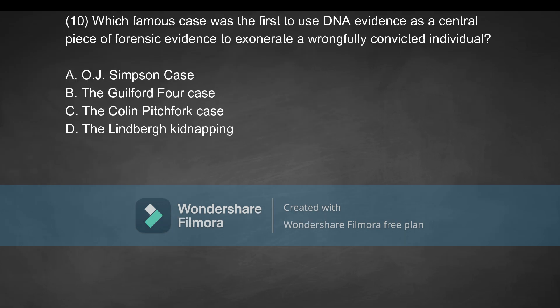Coming to the next question: which famous case was the first to use DNA evidence as a central piece of forensic evidence to exonerate a wrongfully convicted individual? Option A, the OJ Simpson case. Option B, the Guildford Four case. Option C, the Colin Pitchfork case.